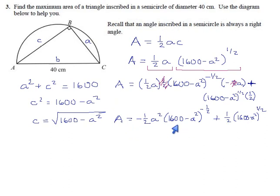I'm a little tempted to pull out a negative sign too. In fact, I think I will take out minus one-half and also 1600 minus a squared to the power of minus one-half.